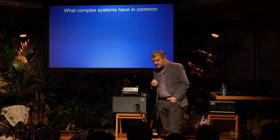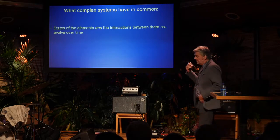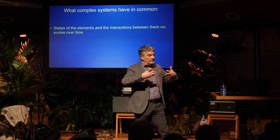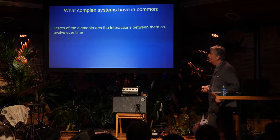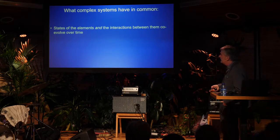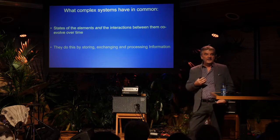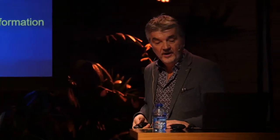Complex systems have a few things in common. They consist of elements — think of those birds, the molecules in your immune system, or people in an economy — individual components interacting with each other. Their state changes over time, and the interactions change over time too. It is this co-evolution of elements and their interactions that defines what a complex system is. They do this by storing, exchanging, and processing information — and that's a slightly new angle. We describe complex systems in terms of the way they process information.